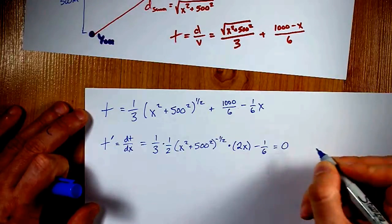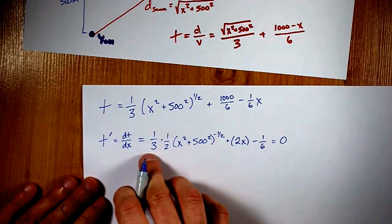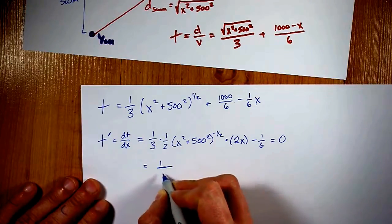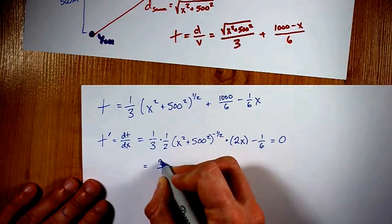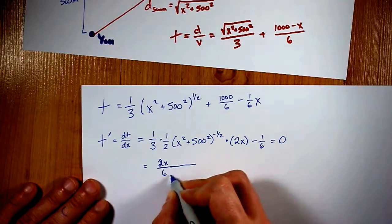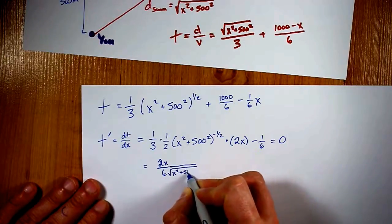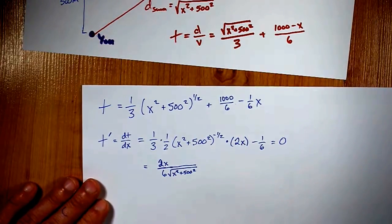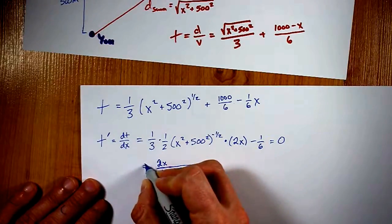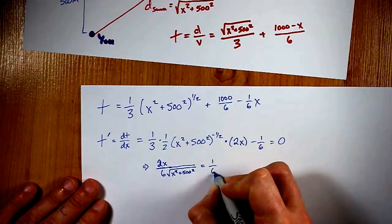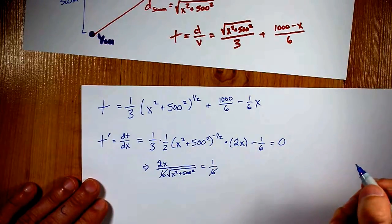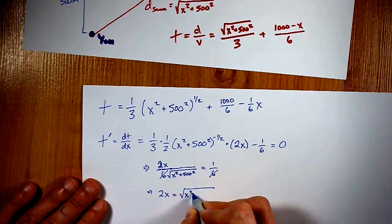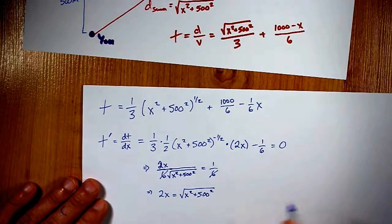We are setting this equal to zero to solve for the x that minimizes time. All right. This is going to take a little bit of work, though. We have 1 over 6. The top is multiplied by 2x, and the bottom also has this square root of x squared plus 500 squared in it. The negative brings it to the denominator of the fraction, and the half is what causes it to be square rooted. And I'm going to move my 1 sixth to the other side, so I have this. To solve this, I'm going to square both sides.